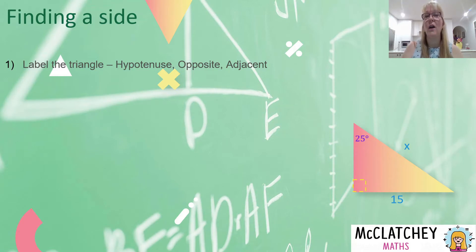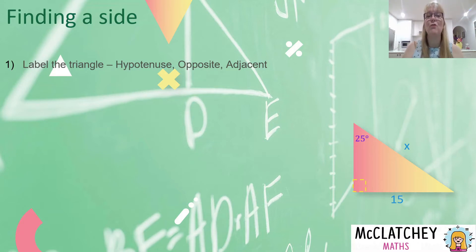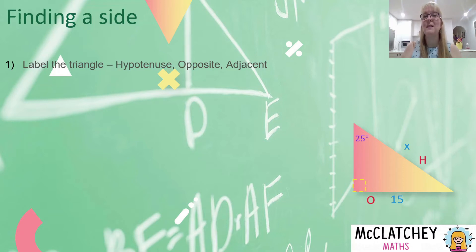Let's get straight into it. We're going to talk about the general process on how to find a side on a right-angle triangle. You'll notice I've got a right-angle triangle on the bottom right of the screen. Our very first step is to label our triangle with a hypotenuse, an opposite, and an adjacent — we did run through this in our previous video. Label the hypotenuse, then the opposite, and what's left over is the adjacent side.